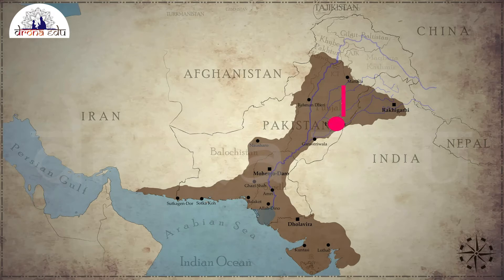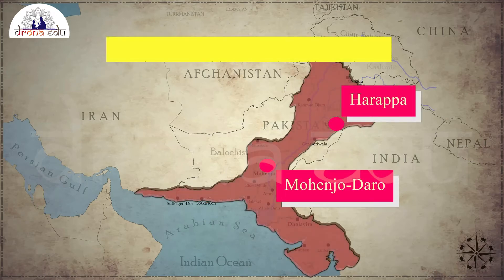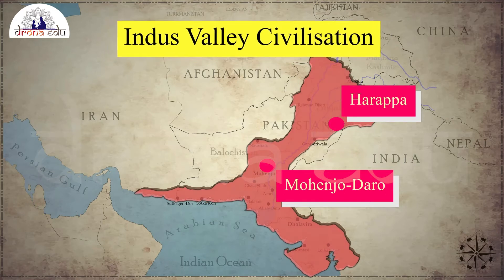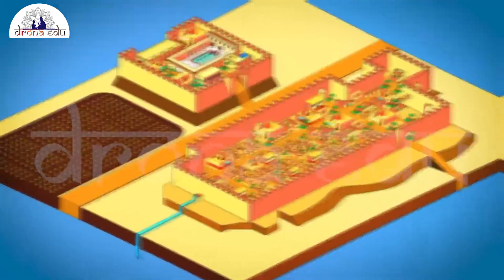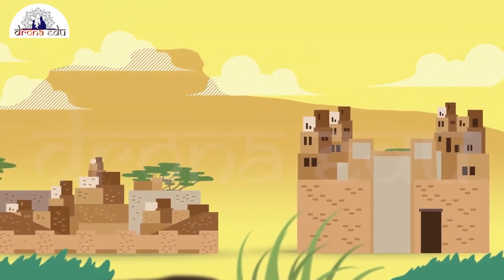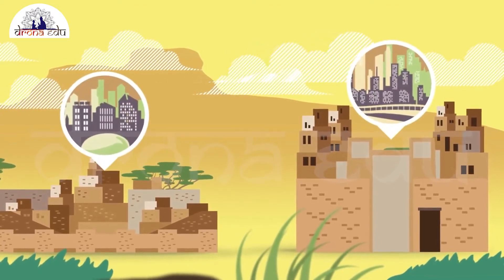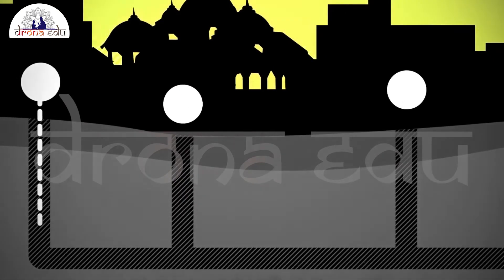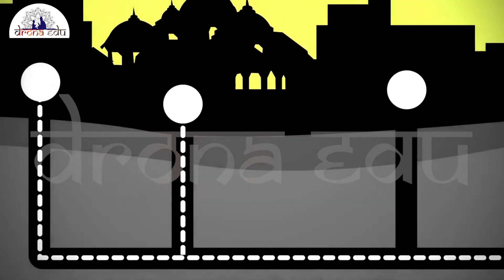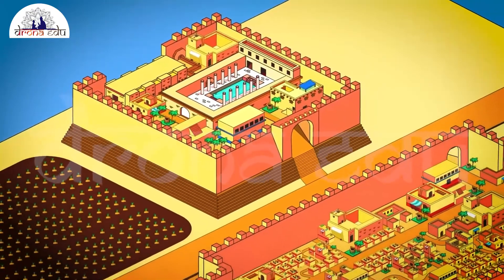In the Indian subcontinent, excavations at Harappa and Mohenjo-daro in the Indus Valley civilization made extensive use of geometry. It was a highly organized society with well-planned cities. The roads were parallel to each other and there was an underground drainage system.